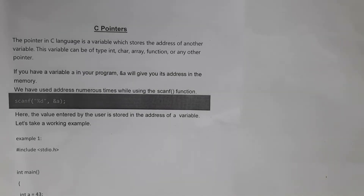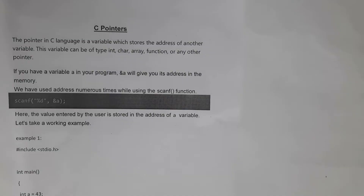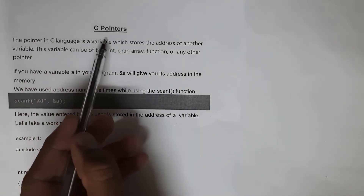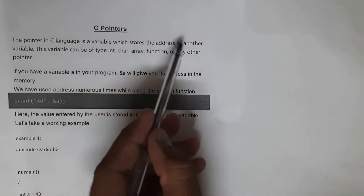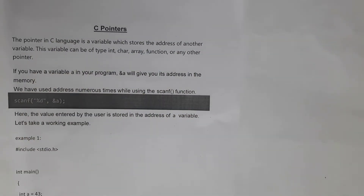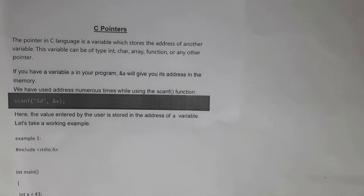Hi guys, welcome to my channel. In this video I will be covering pointers in C. I have uploaded complete PPI subject tutorials — I will provide the link in the description. A pointer in C language is a variable which stores the address of another variable. By using pointers we can store the address of a variable, and that variable can be of any type like integer, character, float, etc.